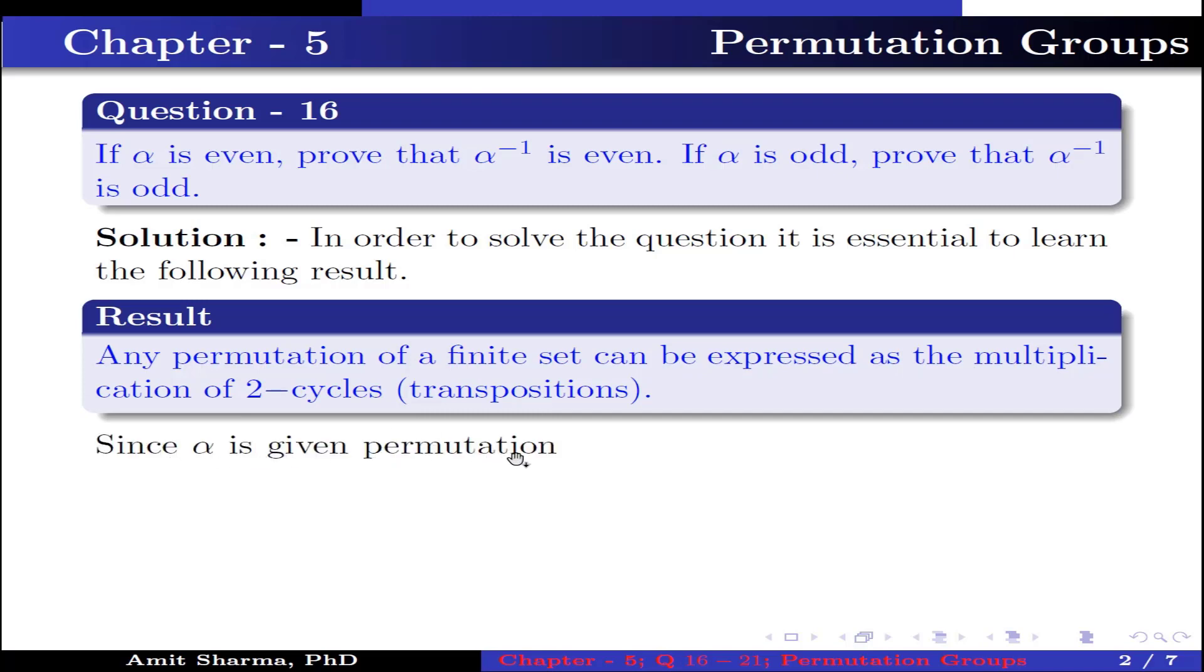Since α is a given permutation, α can be written as β₁β₂...βₙ₋₁βₙ for some positive integer n, where βᵢ is a 2-cycle for every i = 1,...,n.